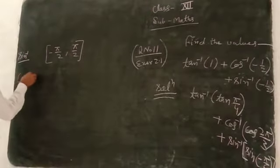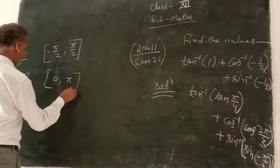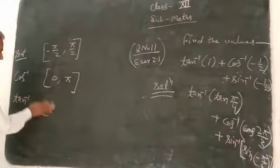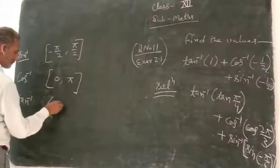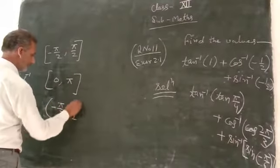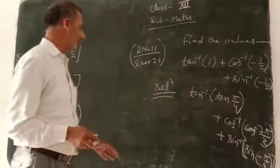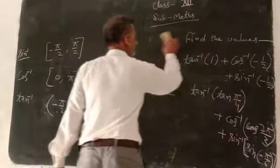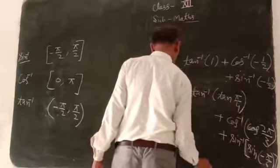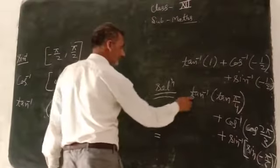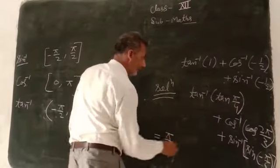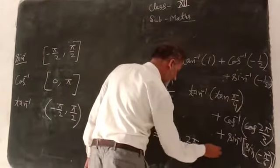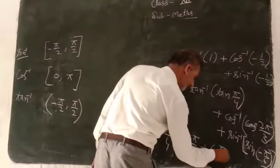In case of cos inverse, here the principle value range is 0 to π. And in case of tan inverse, the principle value range is minus π/2 to π/2. If you are aware of it, then just do π/4. Just you see, tan inverse π/4 plus cos inverse 2π by 3, and sin inverse minus π by 6. That will you get.